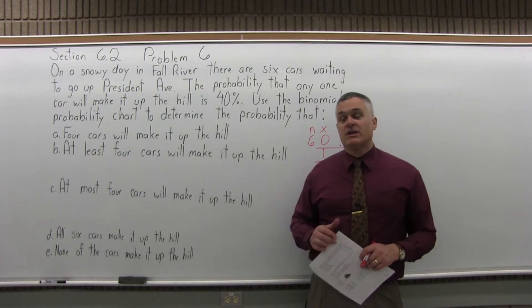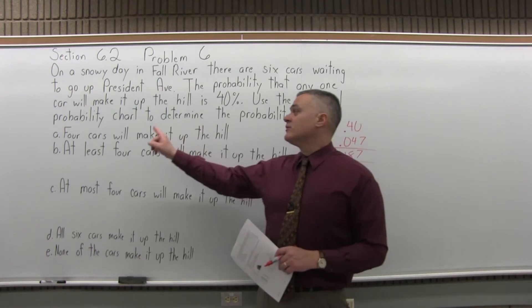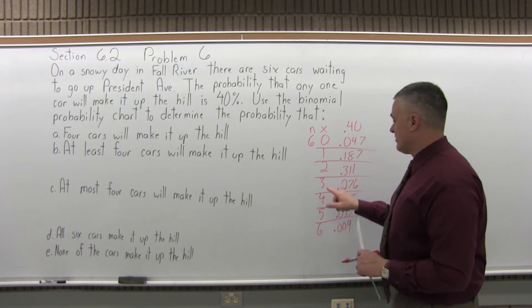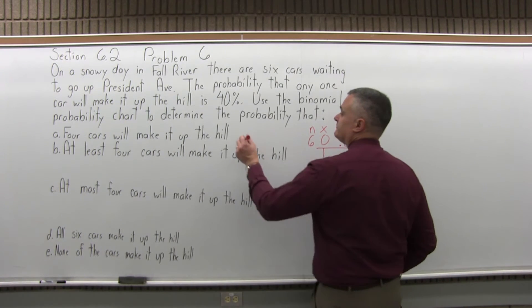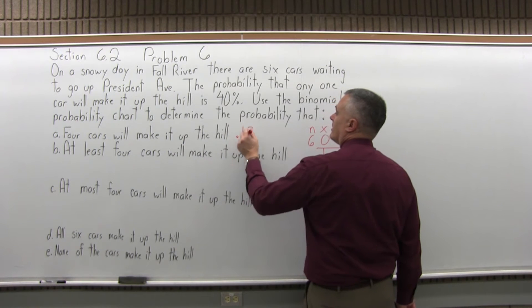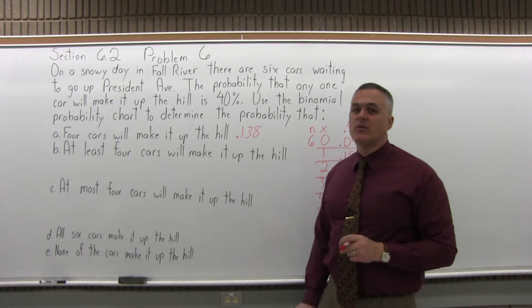Based on that information, the probability that four cars will make it up the hill, what you do is you go and find four. Next to four, we see .138. So, that's slightly less than a 14% probability.